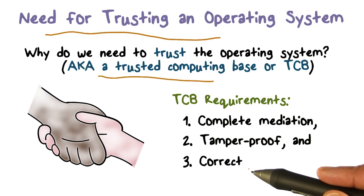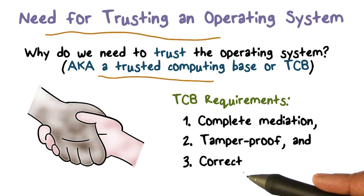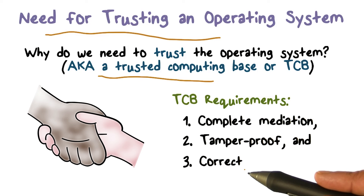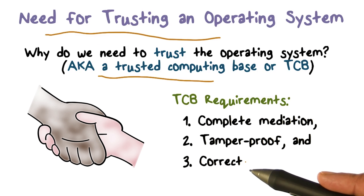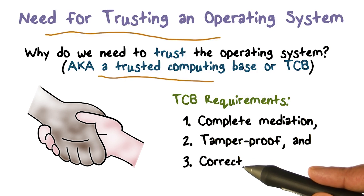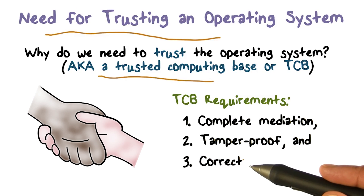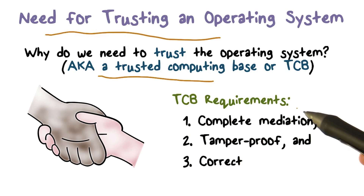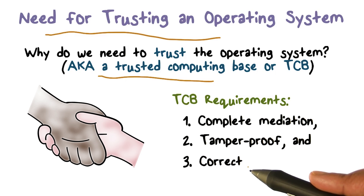The third requirement is the correctness requirement. If you're going to call a system trusted and completely rely on it to ensure protected resources get used properly, then whatever functionality is implemented by the trusted computing base should be done correctly. Because if there is a vulnerability, a bug, or some error in the TCB, it has the keys to the kingdom. So the OS has to be trusted: you shouldn't be able to bypass it — that's complete mediation; you can't alter it if you're untrusted; and whatever functionality it implements is done correctly.